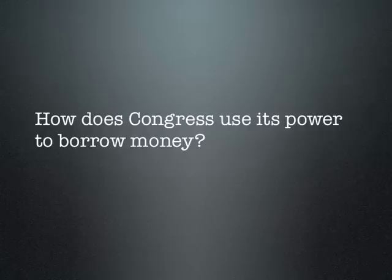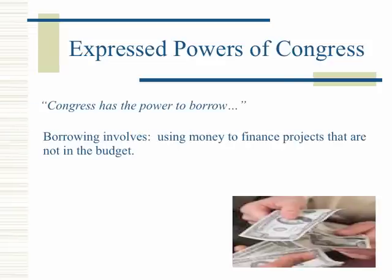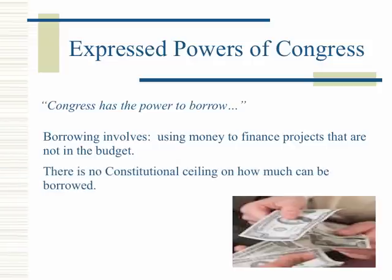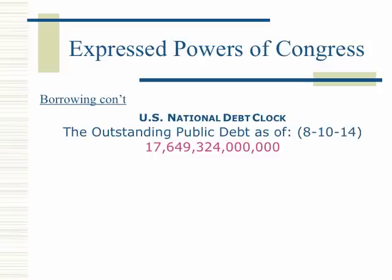How does Congress use its power to borrow money? Congress has the power to borrow. Borrowing involves using money to finance projects that are not in the budget. There is no constitutional ceiling on how much can be borrowed. Borrowing leads to debt. As of August 10, 2014, the outstanding public debt was well over $17 trillion.